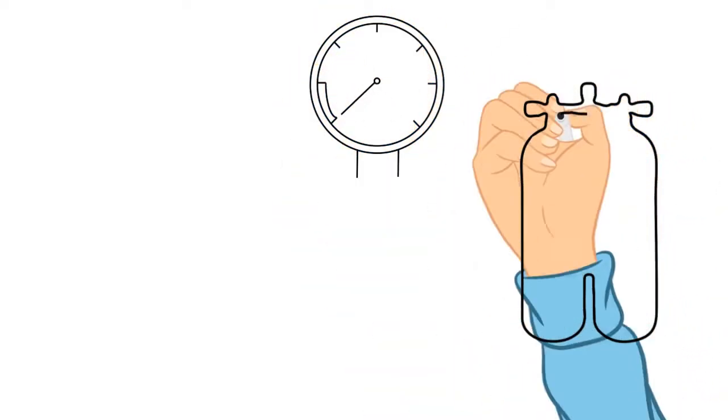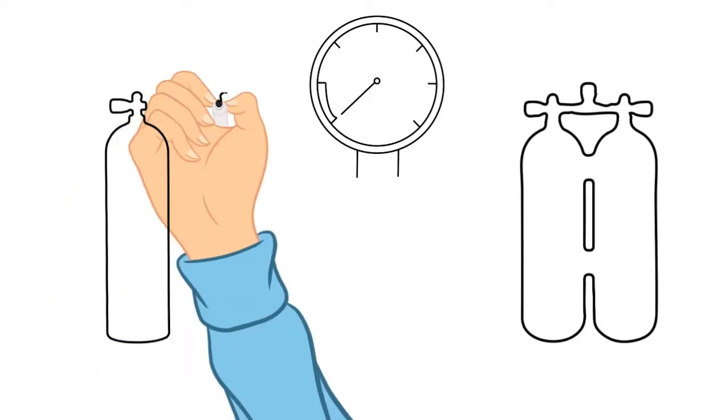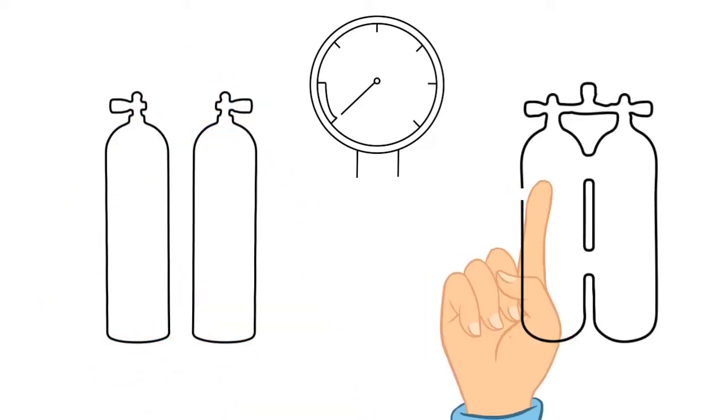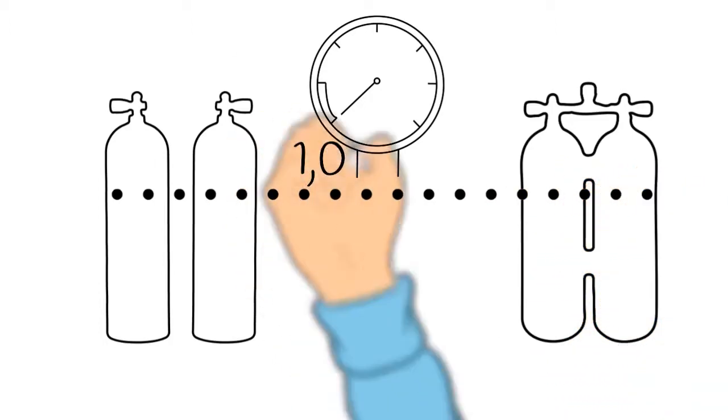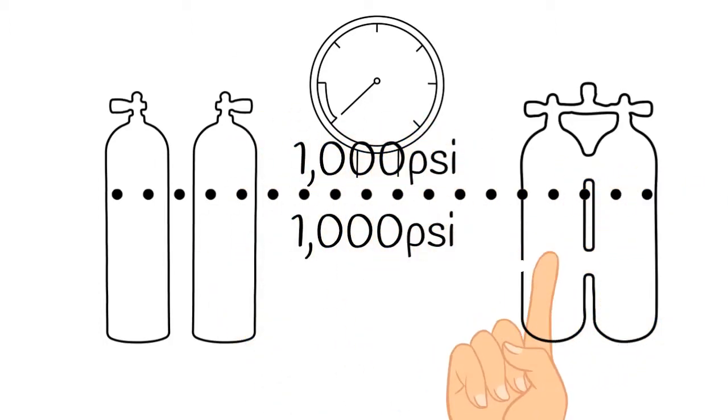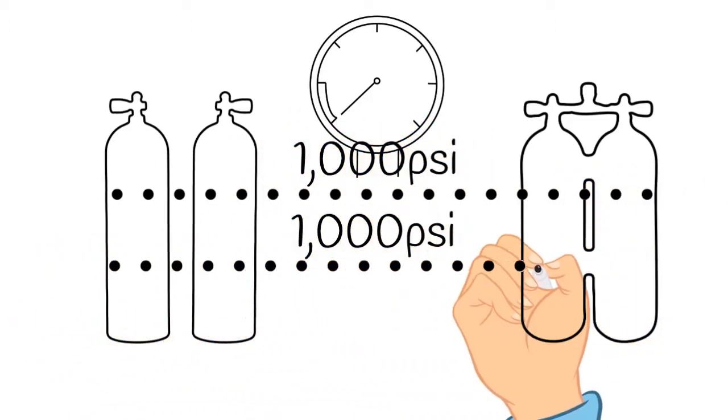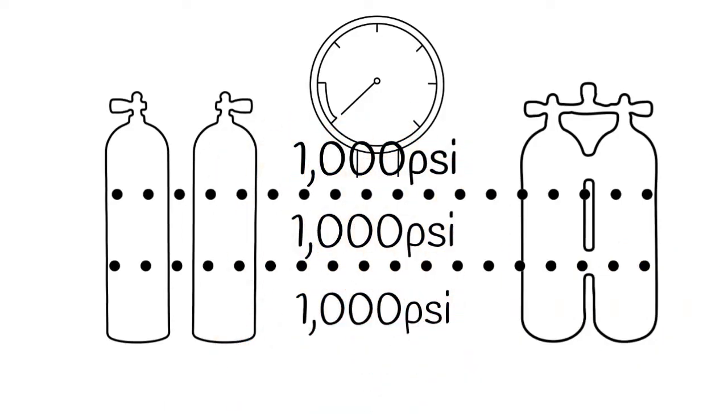The easiest way to use this in practice is once we get in the water, to look at our pressure gauge. Let's say that pressure gauge says 3,000 psi. It's pretty easy math - that means after I use a thousand psi I need to leave the cave, and I can't use any more than a thousand psi on the way out, and that way I surface with no less than 1,000 psi.